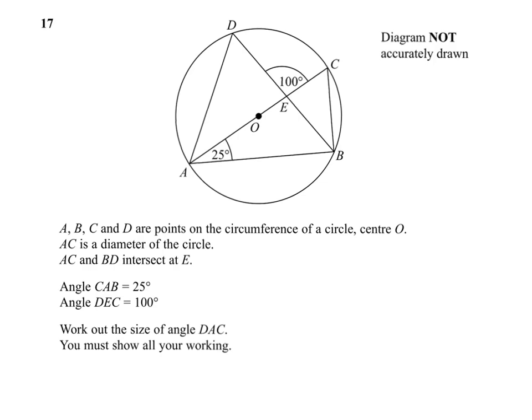Question 17. ABCD are points on the circumference of the circle center O. AC is the diameter of the circle. AC and BD intersect at E.